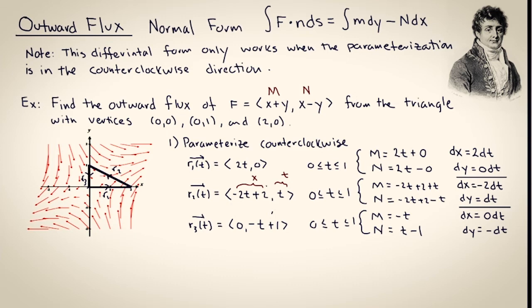So you take negative 2t plus 2 and you plug it in for the x, and you take t and you plug it in for the y, and that gave me x plus y and x minus y.